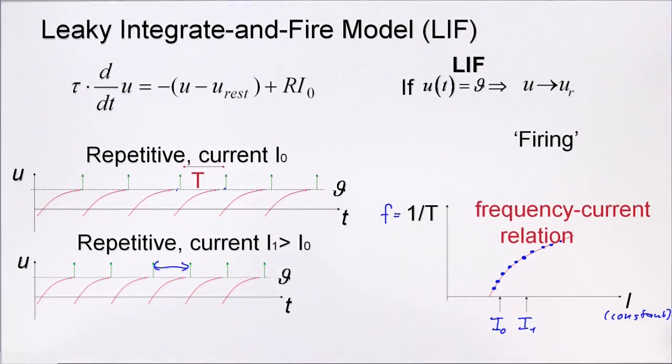Now this is the frequency-current relation, or the f-I curve, also called the gain function of the neuron.